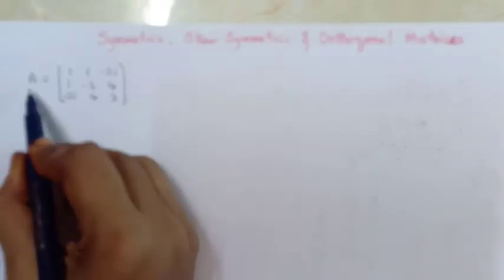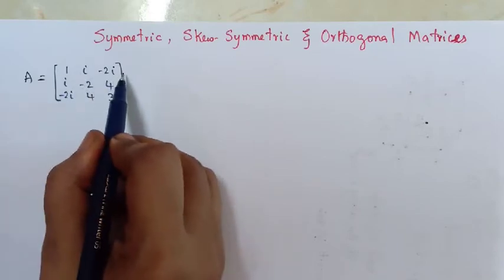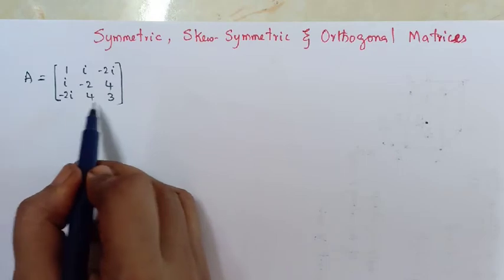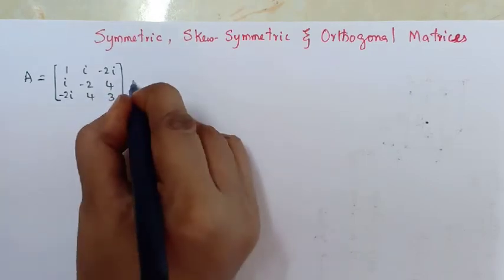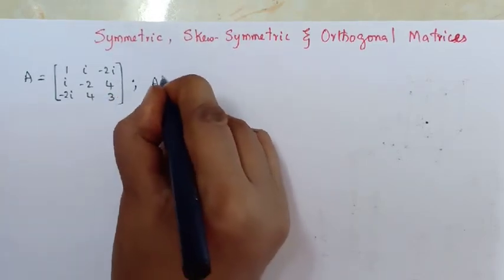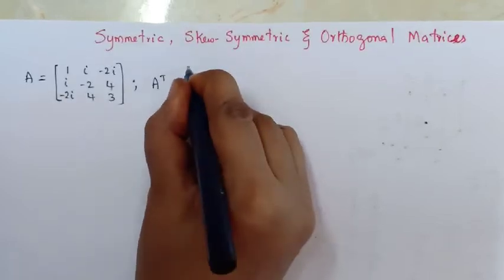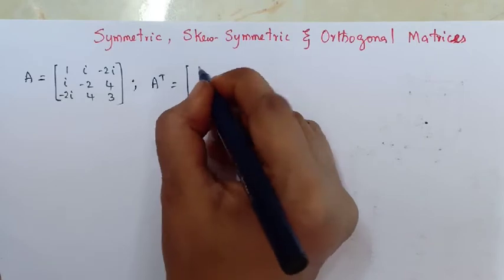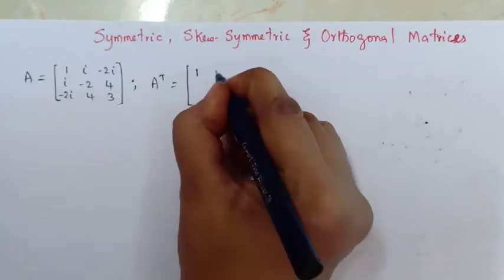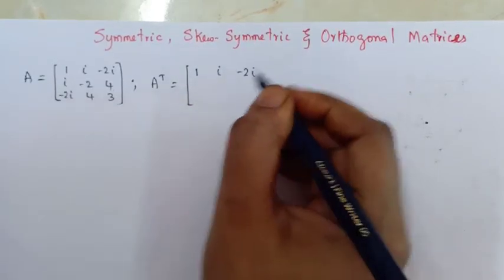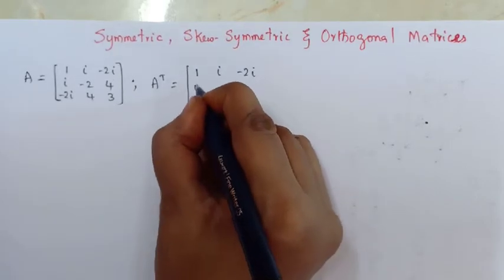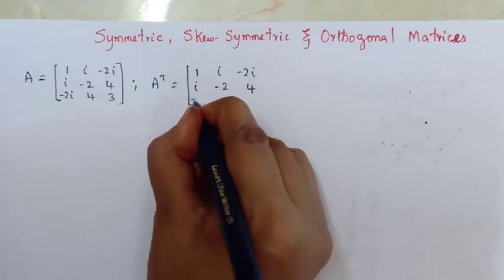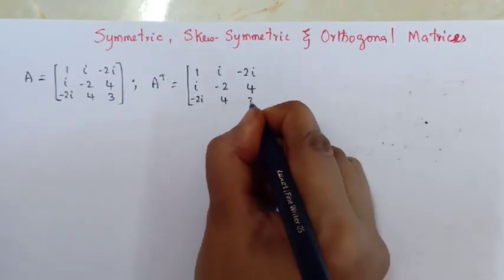First, consider a matrix as shown here: 1+i, -2i, i, -2, 4, -2i, 4, 3. For this matrix, let us find out what the transpose is. I will write the A transpose matrix as: 1+i, -2i, i, -2, 4, -2i, 4, 3.